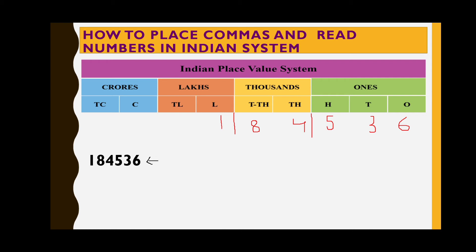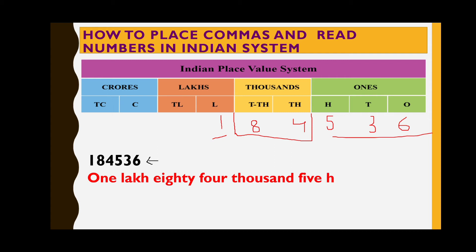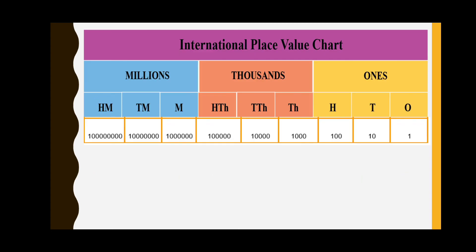We have the lakhs period, the thousands period, and the ones period. Reading from the left: one lakh, eighty-four thousand, five hundred thirty-six. When placing commas: one, then comma, eighty-four, then comma, five hundred thirty-six — that is, from the right, three digits for thousands period, then two digits for lakhs period.